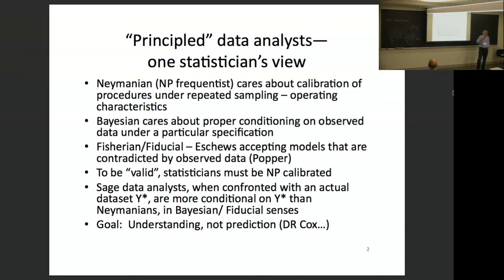The idea is: you want Neyman calibration for the interval, so it has the right coverage on average. But when you see a data set, what changes? Neyman and Fisher were the two founders of modern statistics — they never really agreed on much, and Fisher really hated Neyman. Fisher was much more, in the fiducial sense, wanting to condition on the observed data. He was very Bayesian in his thinking. And Neyman, if you look back at the original definition of confidence interval, he wanted to be Bayesian too — he defines a confidence interval as a Bayesian interval that has the right coverage no matter what prior distribution is used.